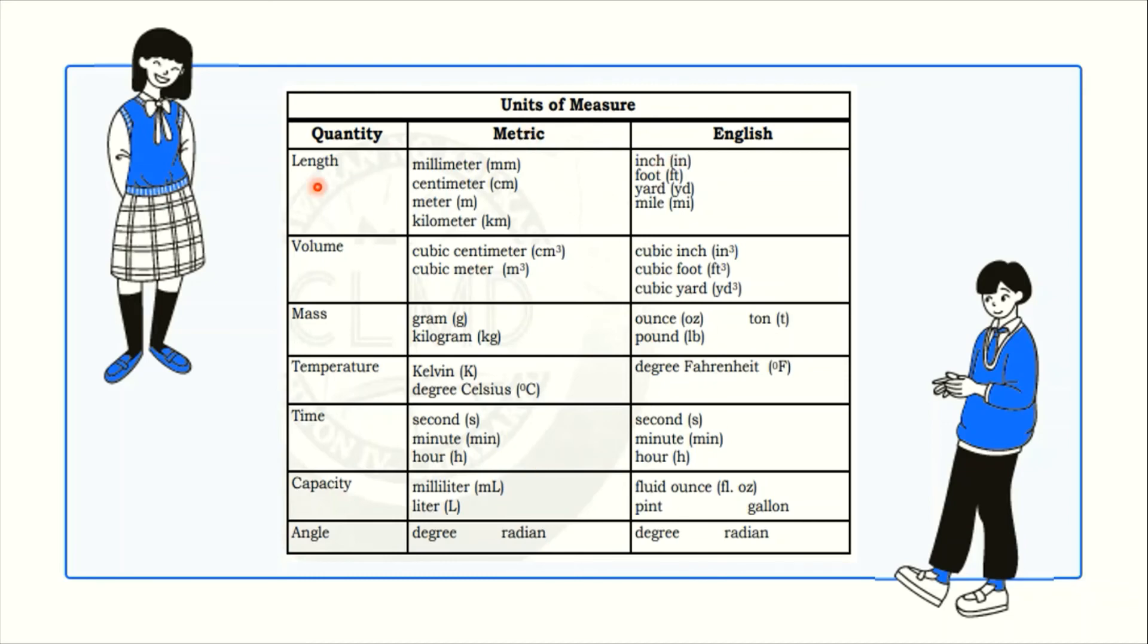For metric, yung length ay meron siyang meter and so on. Sa English, ito yung inch, foot, yard, mile, and so on. Marami pang iba. For volume, sinusukat natin ito sa metric ng cubic meter, cubic centimeter. Ito naman yung katumbas niya sa English.